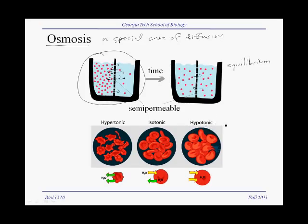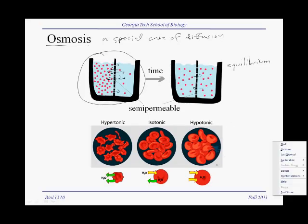It's even worse if our cells are put in a hypotonic solution, meaning that the concentration of solute molecules outside the cell is much lower than inside our cell. Let's say we put our cells in plain distilled water. At that point, water will rush into our cells trying to lower the concentration of solutes inside the cell. As a result, our cells will swell up, and because we don't have anything to confine our cell membranes like plant cell walls, our cells will actually burst once they have taken in enough water.